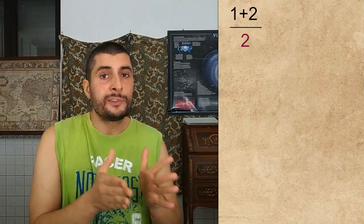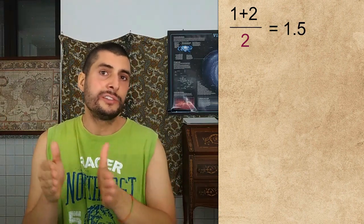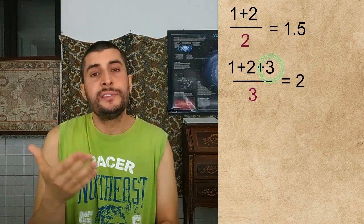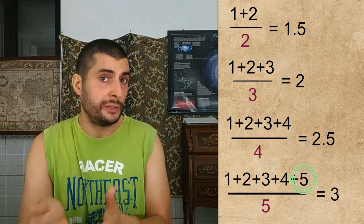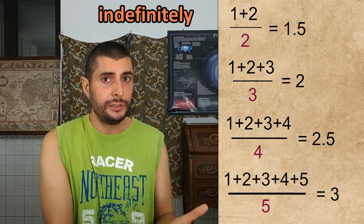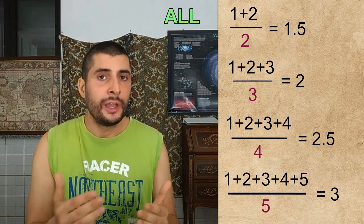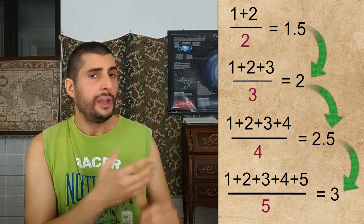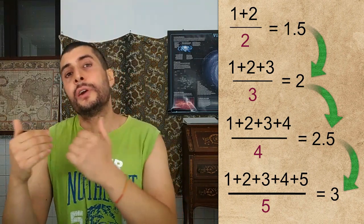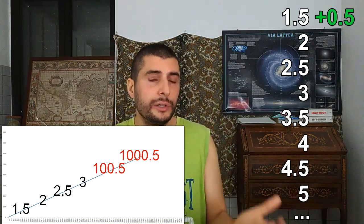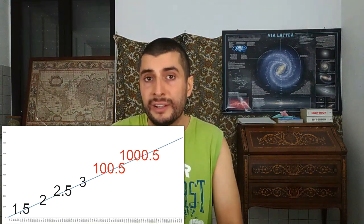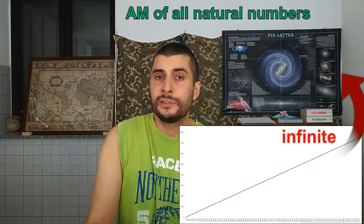We start from 1 and 2. The arithmetic mean of 1 and 2 is 1.5. Now we add 3, and the arithmetic mean is 2. If we add 4, the arithmetic mean is 2.5. If we add 5, the arithmetic mean is 3. If we continue this process indefinitely, we would get the average of all natural numbers. It looks like the average is always increasing by 0.5. If this trend goes on forever, the average will be greater than 100, 1000, and greater than 10,000. In mathematics this phenomenon is called a divergent sequence, and it means that the arithmetic mean of all natural numbers is infinite.